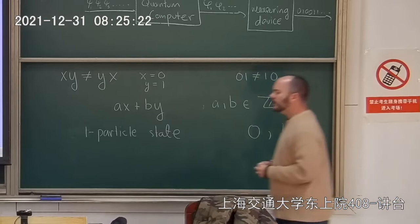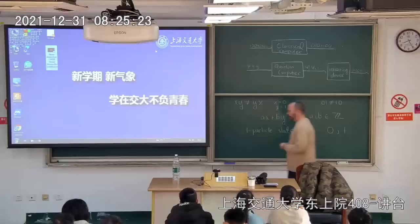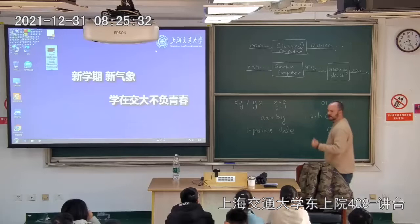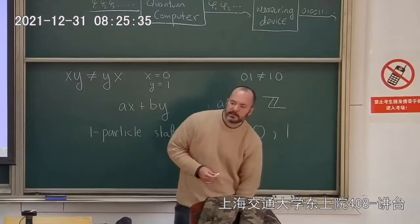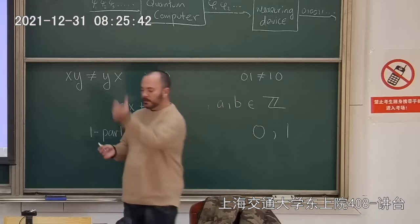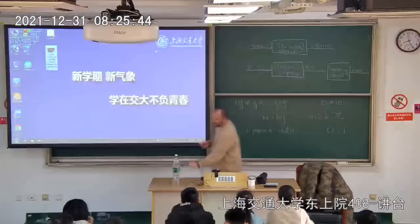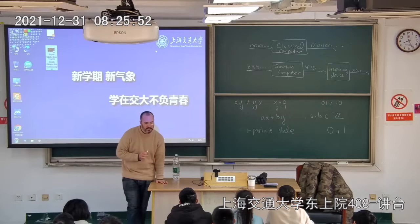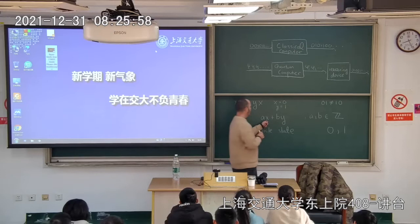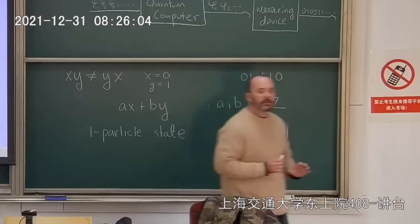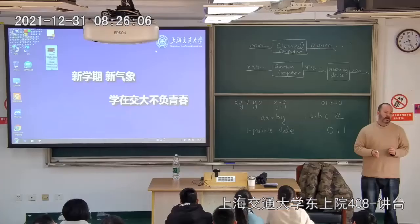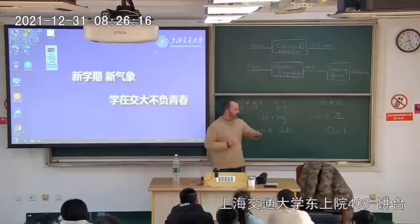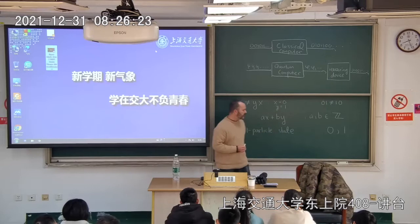Physicists like to say it's both zero and one at the same time. It's like a coin in your pocket — when the coin is in your pocket, it has both properties at once. When you flip a coin and it lands on the table, you're putting the coin in a situation where it has to give you an answer: heads or tails. Similarly with a quantum state — it's partly in zero and partly in one, and when you measure it, it has to give you an answer: state one or state zero. This is how we represent a one-particle state: ax + by.